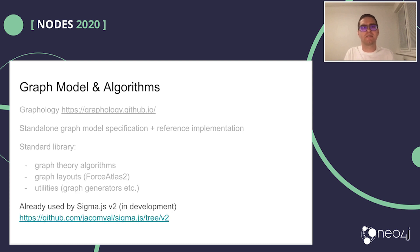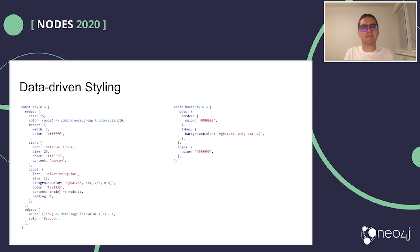Graphology is already used by Sigma.js version 2, which is currently in development but already available in a branch. Thanks to Graphology, I also easily implemented data-driven styling. I can define each style property either with a static value or a function, which takes any node or edge as input and returns the style value.